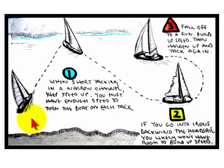In position number one, we get onto a close hauled course on port tack, and we want to build up enough speed so that we have enough momentum, once we get to the other side, to turn the bow through the wind.